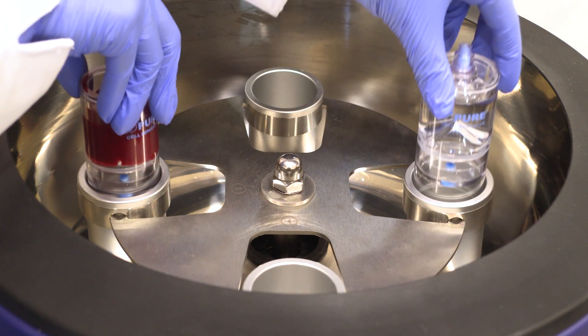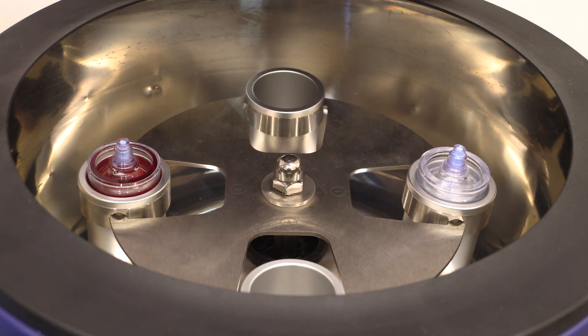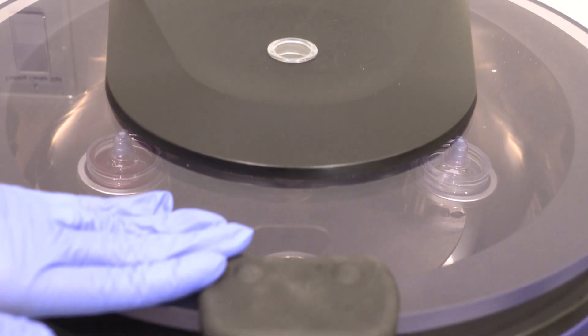Follow the protocol settings provided in the Pure BMC2 IFU insert. Close the centrifuge lid and press start.